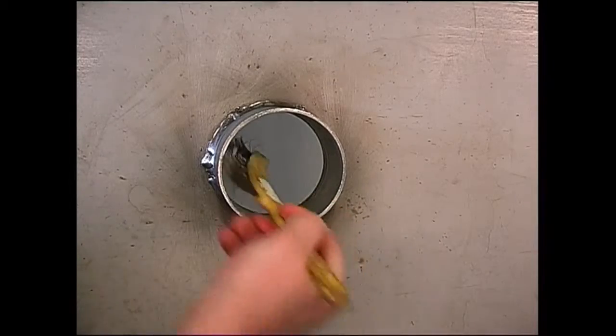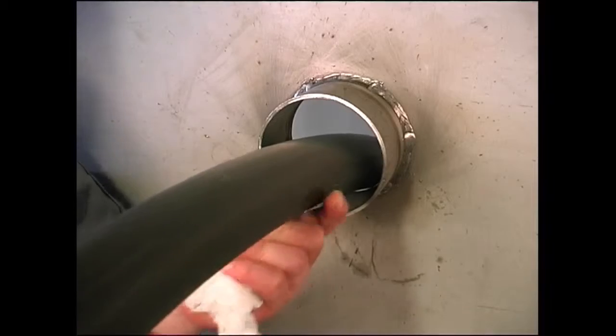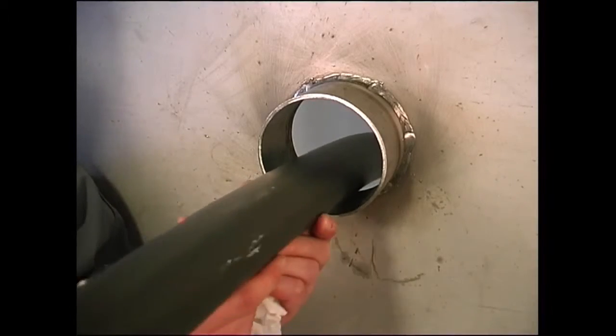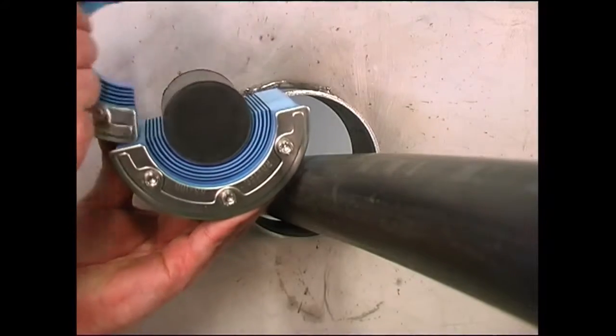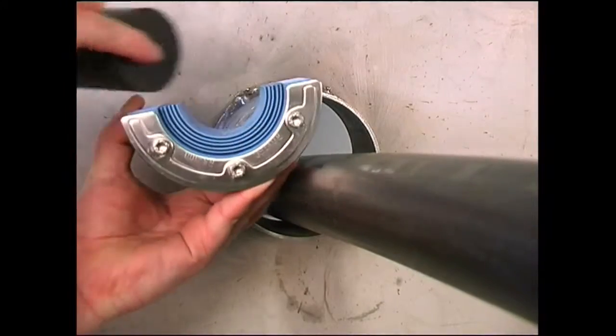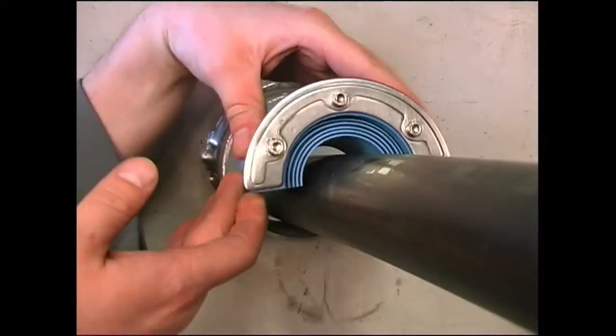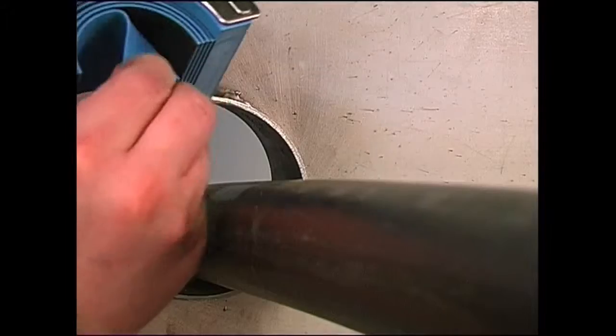Clean the inside surfaces of the sleeve. Feed the cable through the sleeve. Adapt the seal to the right cable diameter by removing layers from each half of the seal.